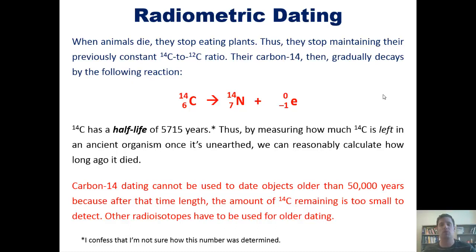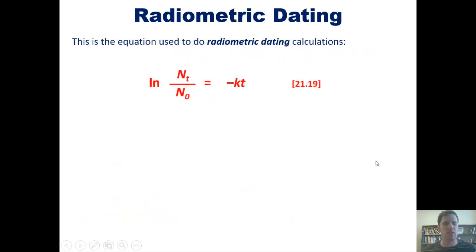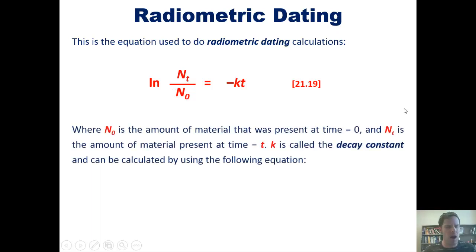Now, just so you know, this is the equation that we use to do mathematical dating calculations. ln of n sub t over n sub nought equals negative kt, where n sub nought is the amount of material that was present at time equals zero. And n sub t is the amount of material present at time equals t. k, just so you know, is called the decay constant and can be calculated by using this equation: k equals 0.693 divided by t sub 1 half. Now, I invite you, if you wish, to go to your text to find out how this equation was derived. I'm not going to show it to you here. That takes us to some cool problems that we'll use to finish up this video.